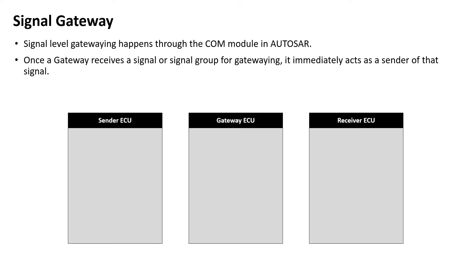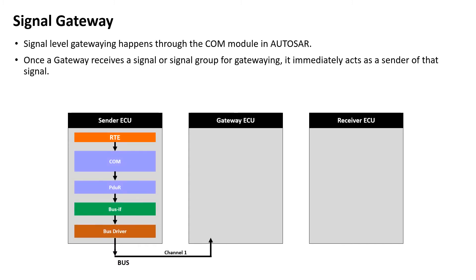Consider three ECUs: a sender, a gateway, and a receiver ECU. Let's say we want to send a CAN message with one signal of two bytes of data from the sender ECU to the receiver ECU via the gateway ECU. The sender ECU sends the CAN message over CAN channel 1, which is connected to the gateway ECU.